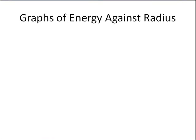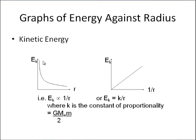You need to recognise the graphs related to this. For kinetic energy, we have two graphs, and we can see that kinetic energy is proportional to 1/r, so it drops as the radius increases. And if we plot kinetic energy against 1/r, the constant of proportionality k equals G×M_Earth×m divided by 2. So those are the graphs you're going to have to recognise.